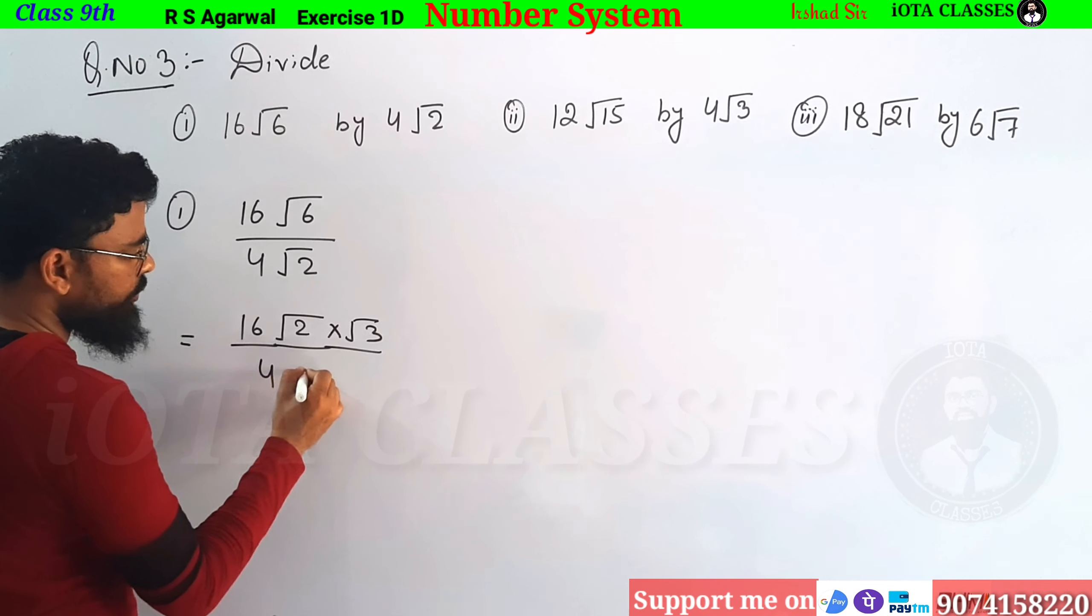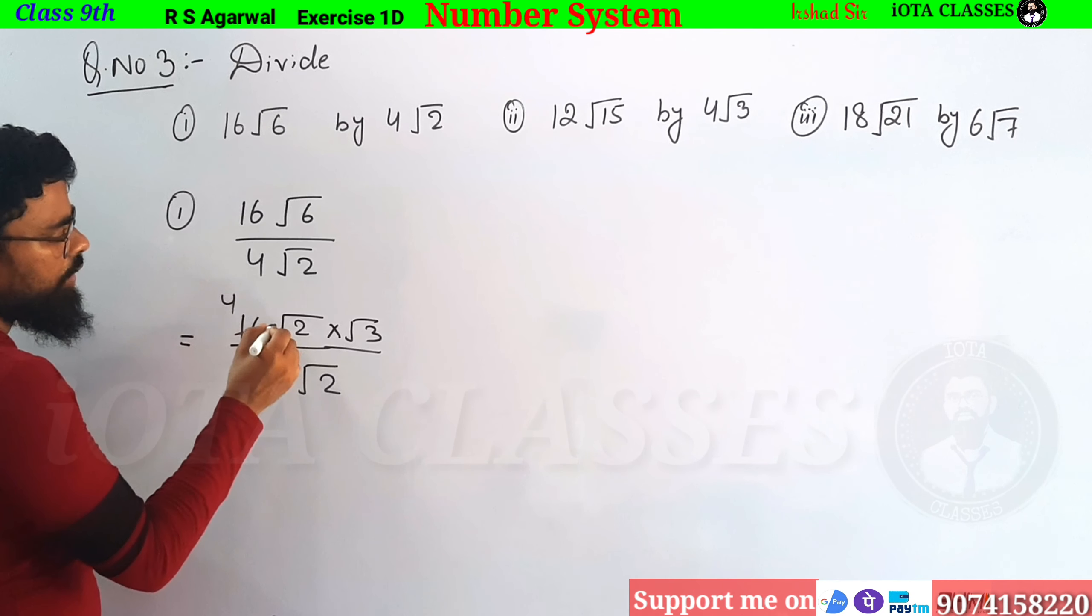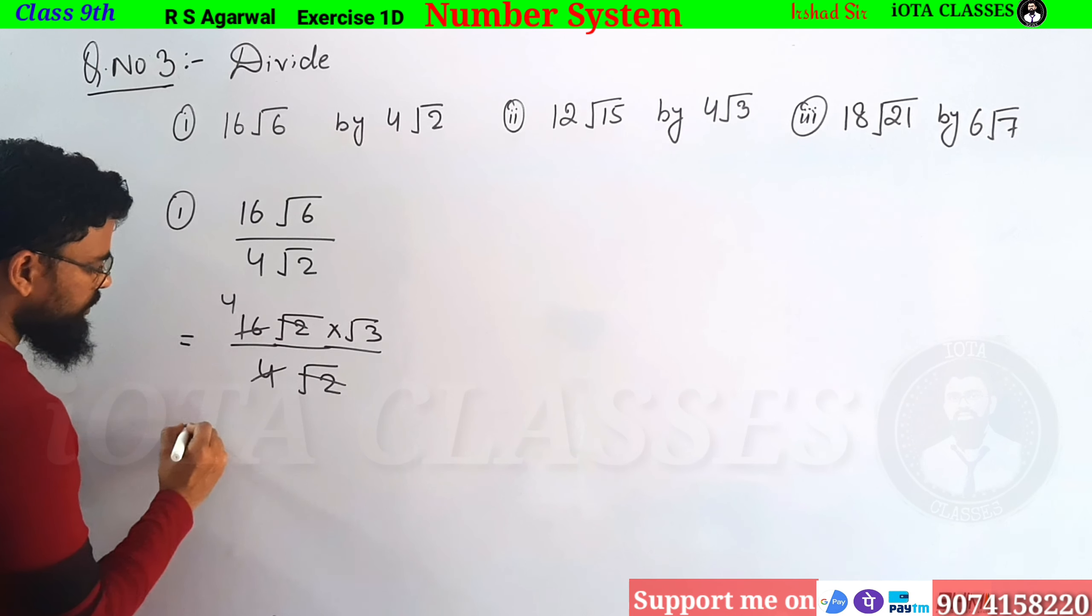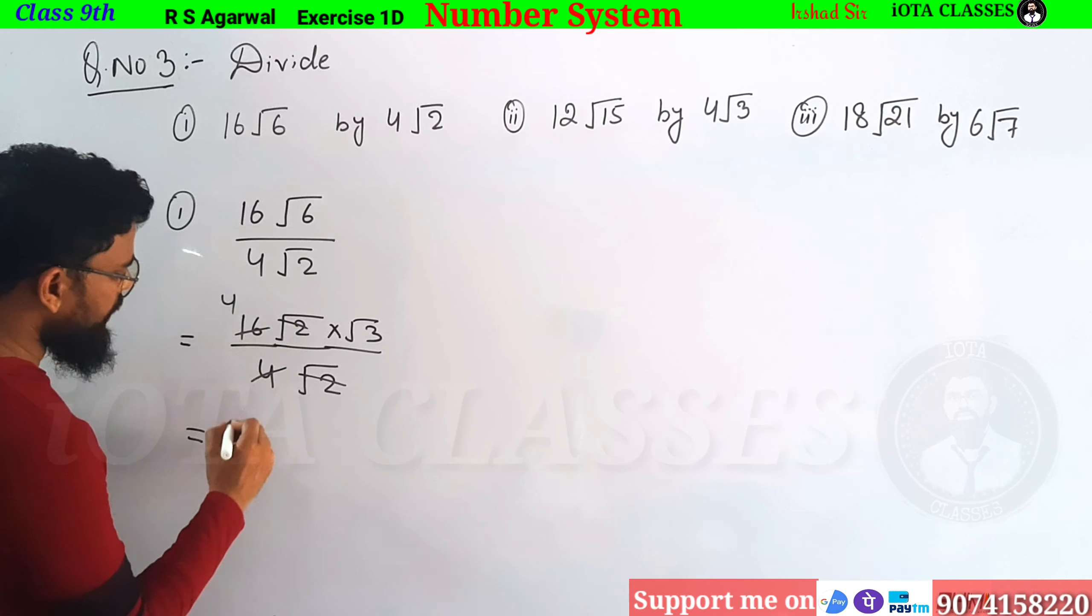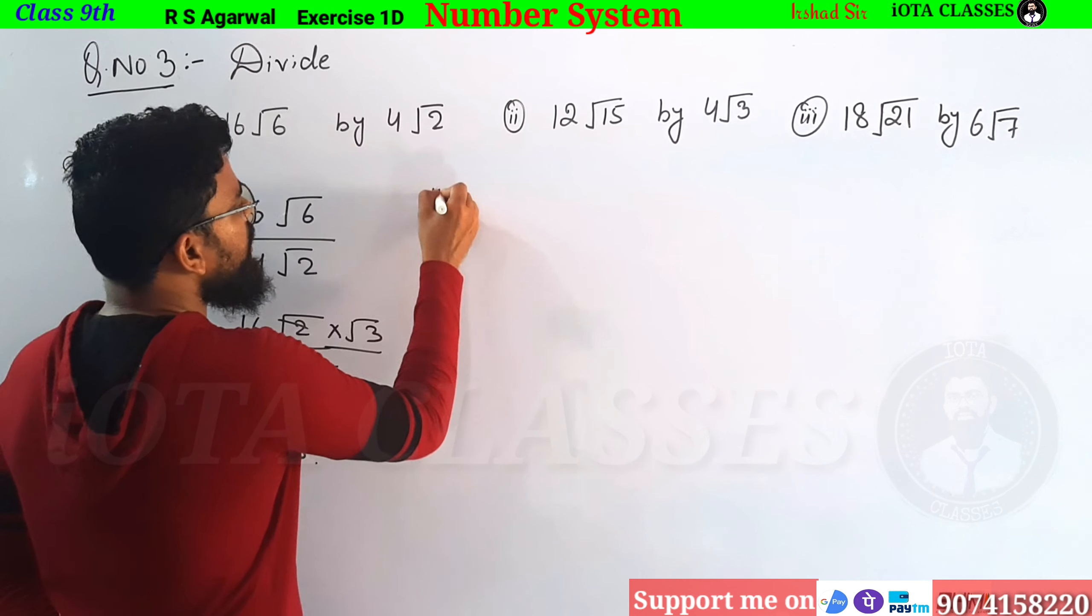And this is our 4 and this is our root 2. So 16 by 4 is 4, and root 2 cancels with root 2. So how much is our answer? This is 4 root 3. This is our first answer. Now, the second question is...